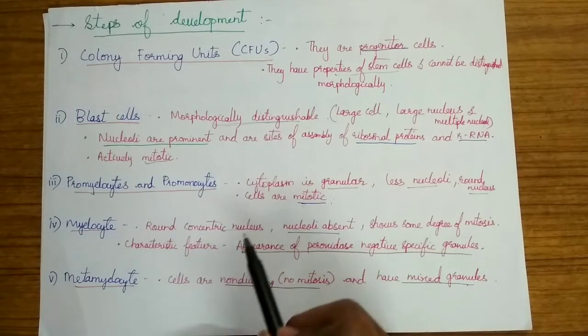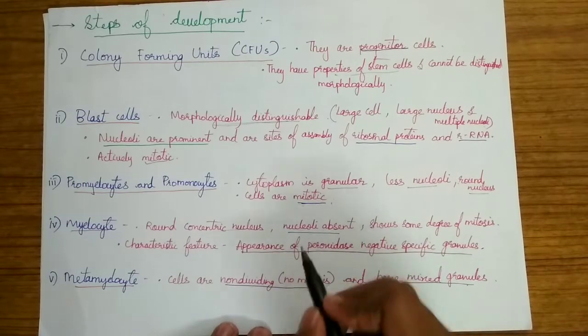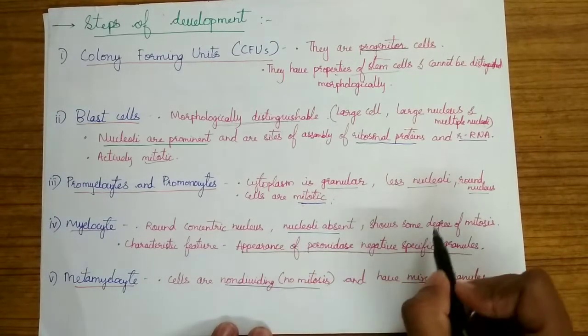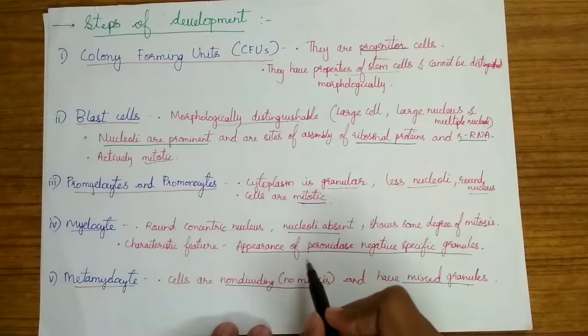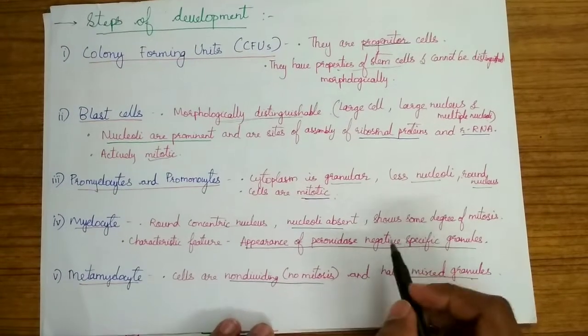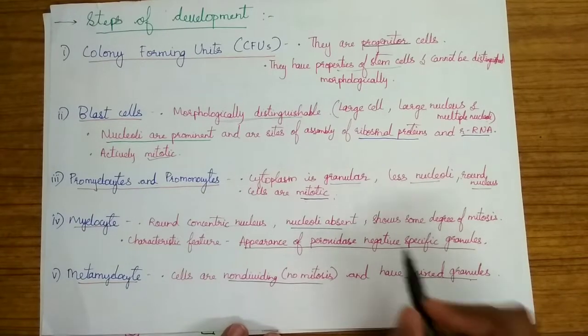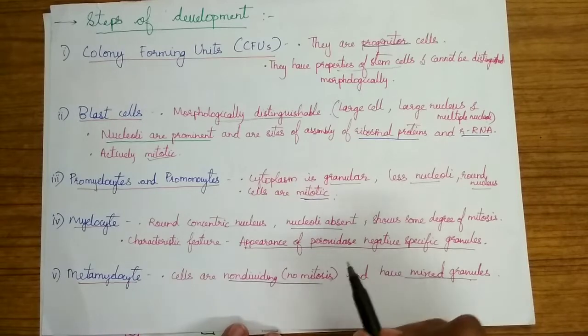Myelocytes: the nucleus is round and concentric, the nucleoli is absent and this is the main point. The nucleoli is absent and it shows only some degree of mitosis. The characteristic feature is the appearance of peroxidase negative specific granules. Even though peroxidase positive specific granules are present, due to the greater number of peroxidase negative specific granules, it is the dominant one.